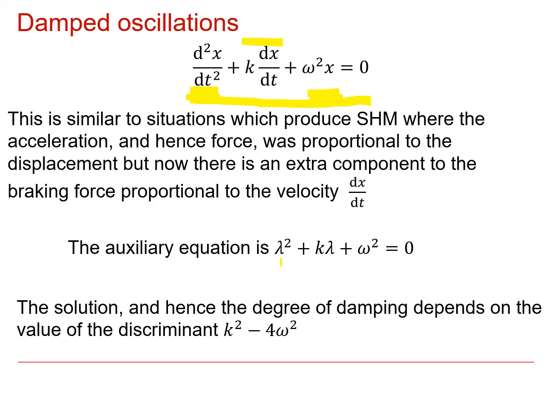The auxiliary equation for this differential equation is lambda squared plus k lambda plus omega squared equals naught. And depending on the discriminant for that quadratic, k squared minus 4 omega squared, we will get different types of solution.